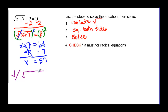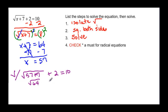We check: the square root of 57 plus 7, and if we add 2 to that, we should get 10. This is the square root of 64 plus 2 equal to 10, and the square root of 64 is 8, and 8 plus 2 is equal to 10. Confirmed.